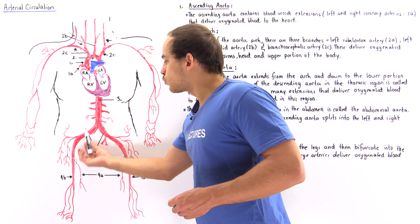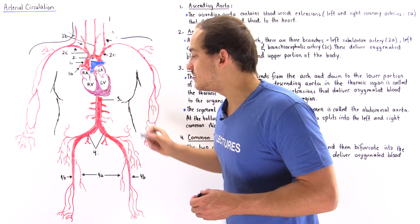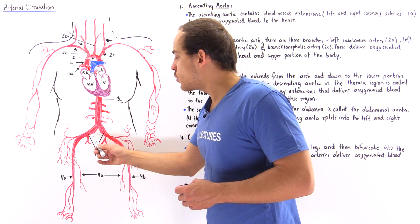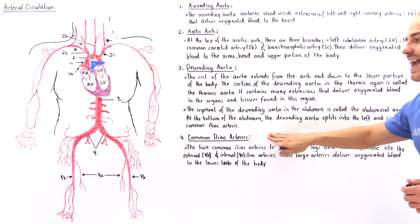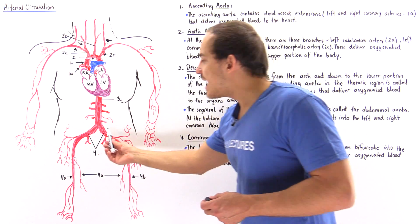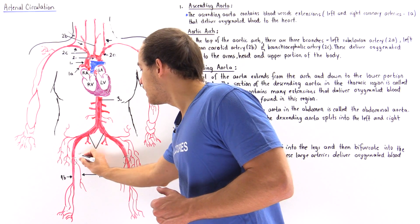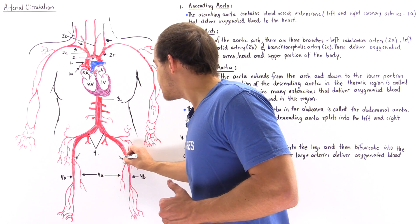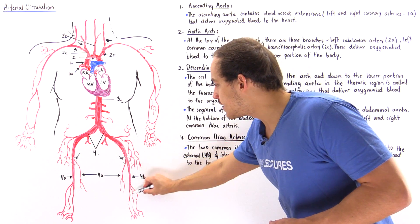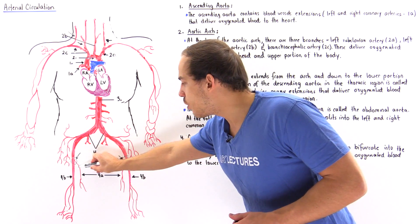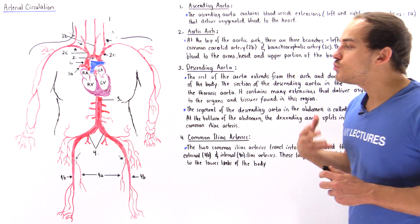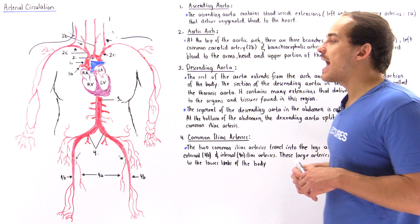When we get down to our pelvic region, the abdominal descending aorta actually splits into two arteries called the common iliac arteries — a left common iliac artery and a right common iliac artery. As they extend downward, they split many more times. They split into the external and the internal iliac arteries. These common iliac arteries deliver oxygenated and nutrient-filled blood to the leg portion of our body — our right and left legs.